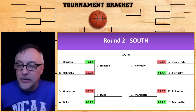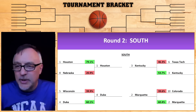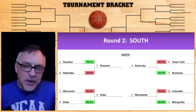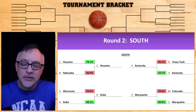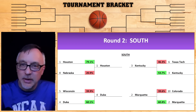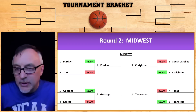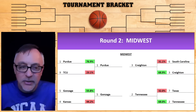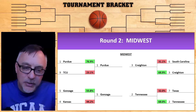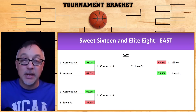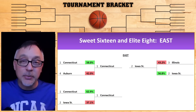Looking at the Midwest: Purdue, Tennessee, and Creighton. In the bottom left-hand corner, Gonzaga is picked at 55.8% against Kansas — that's the notable matchup there.